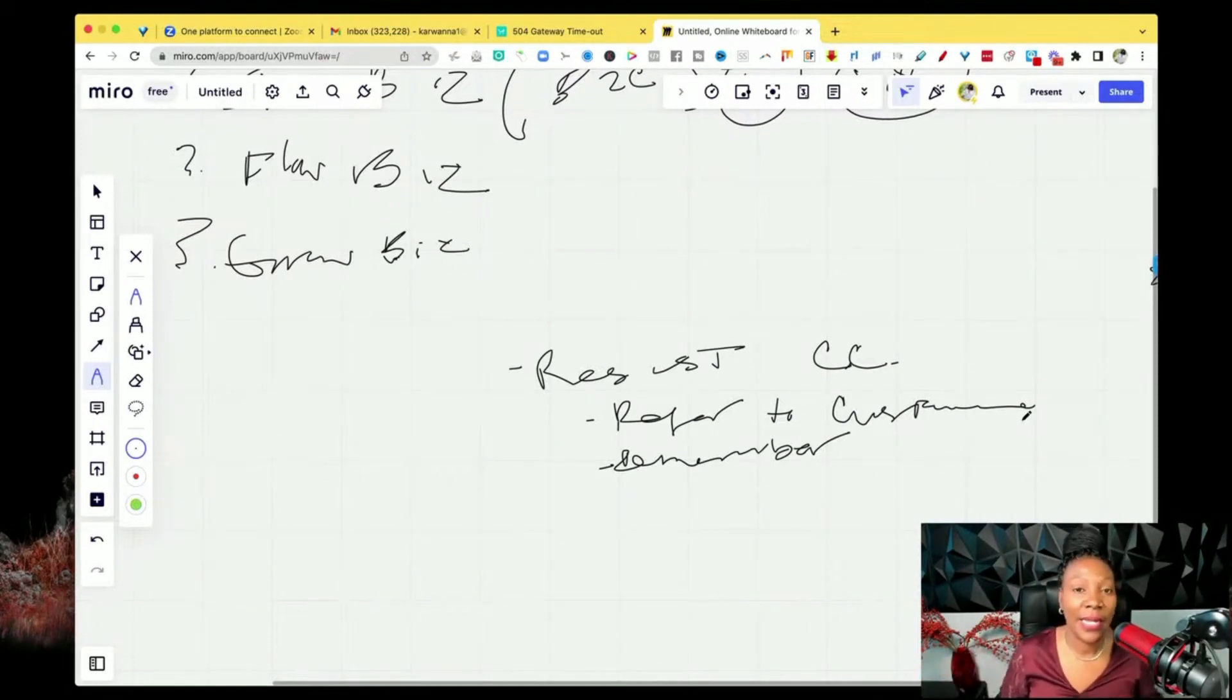And then this way, not only are you able to get some of your time back for referring them, but you're also able to get paid. So these are the three key points to a slow biz, some things that you want to keep in mind. You want to resist the customer chase. You want to refer to customers and then you also want to remember your clientele. You want to remember your clientele.